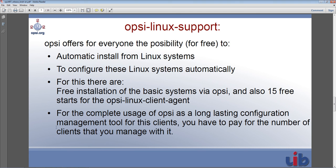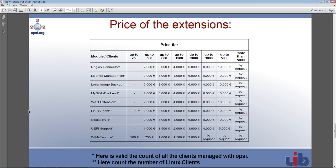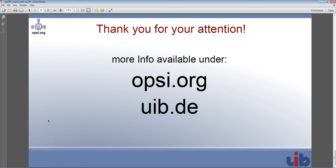That leads to our next overview of client support, but let's also look at the pricing for the extensions, because our Linux clients have a price for the Linux agent after these 15 free starts. There is a price tier that you can look at, and remember you can always check our websites opsi.org or uib.de. Thank you for your attention — have a good day and until next time.